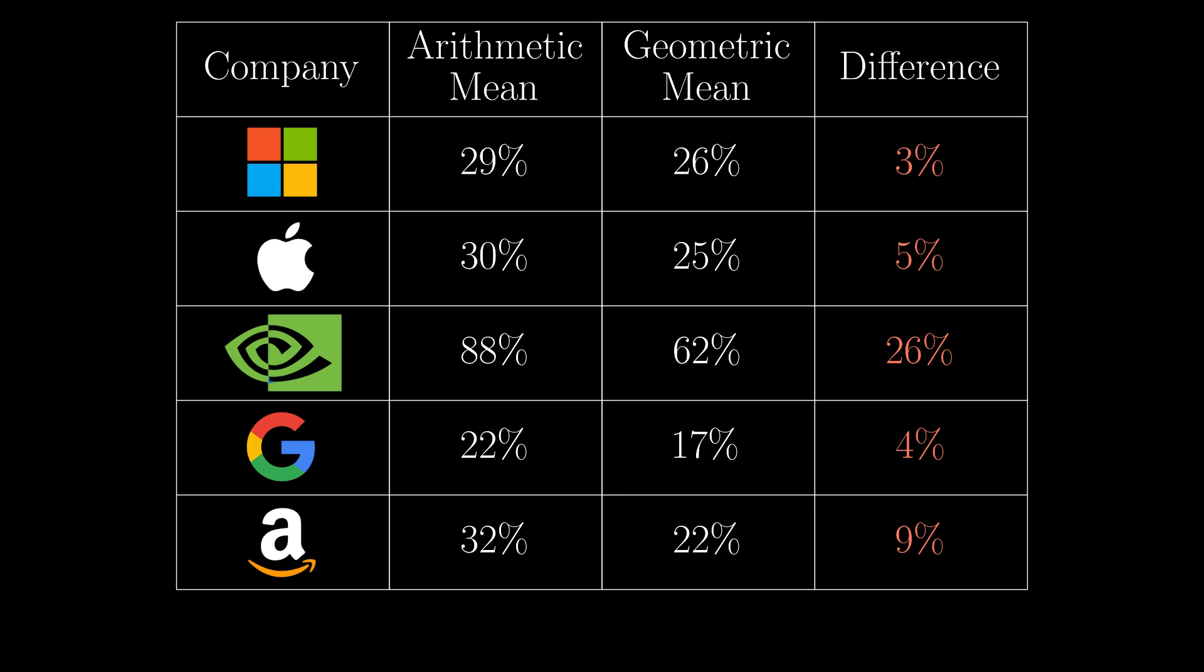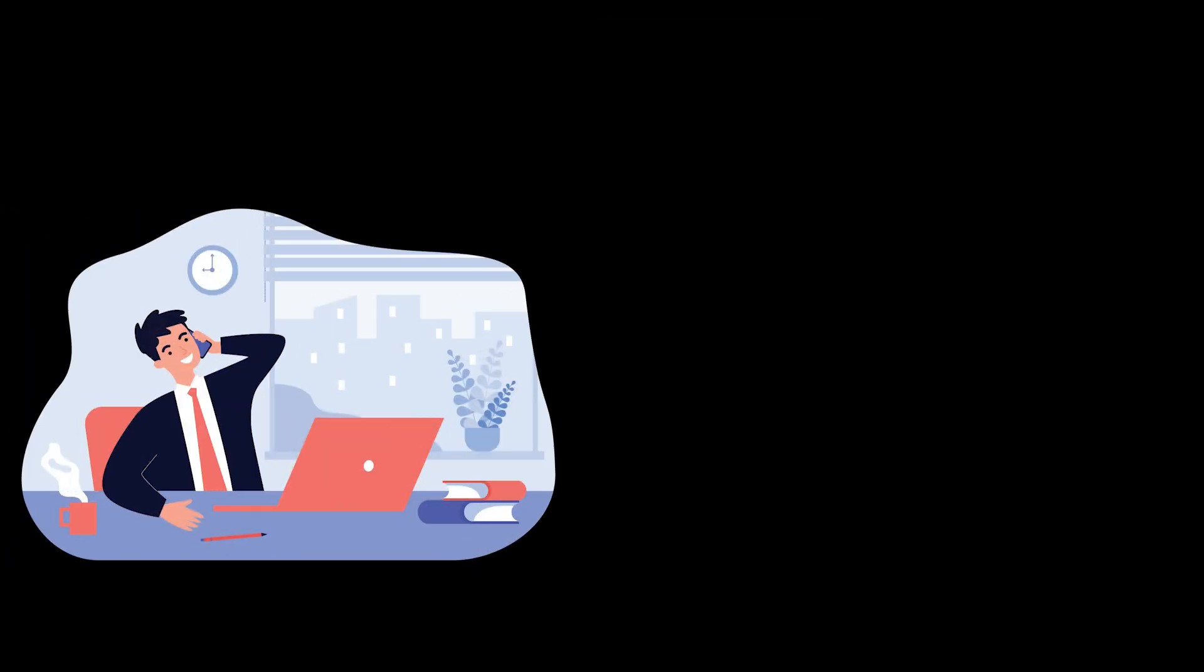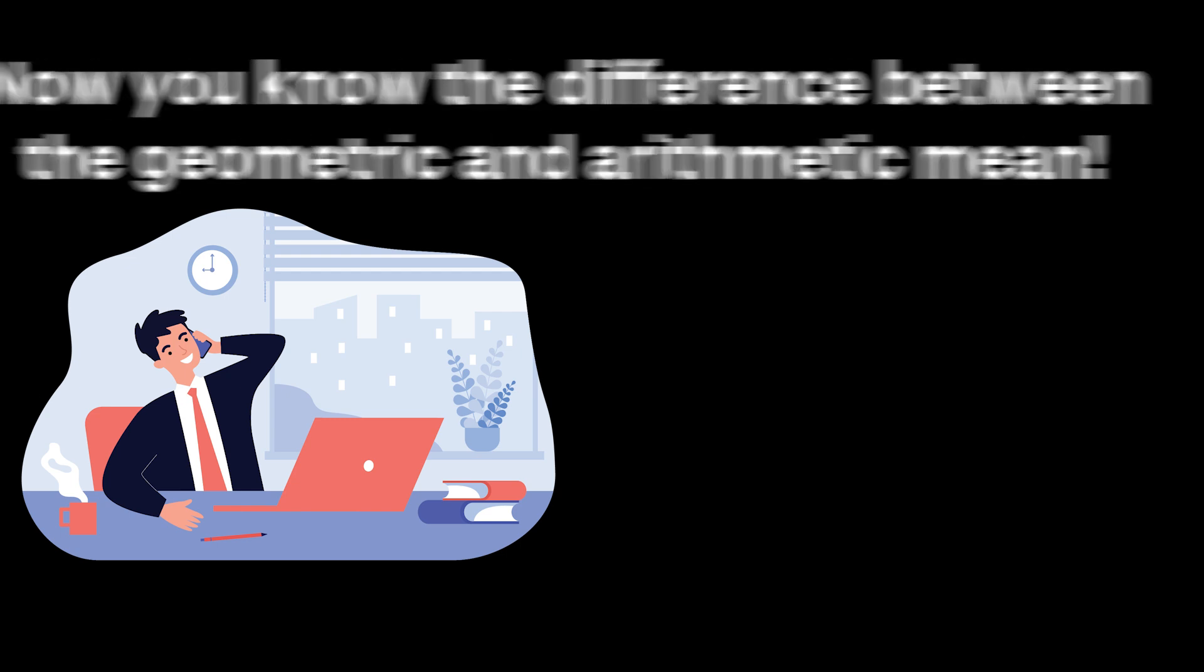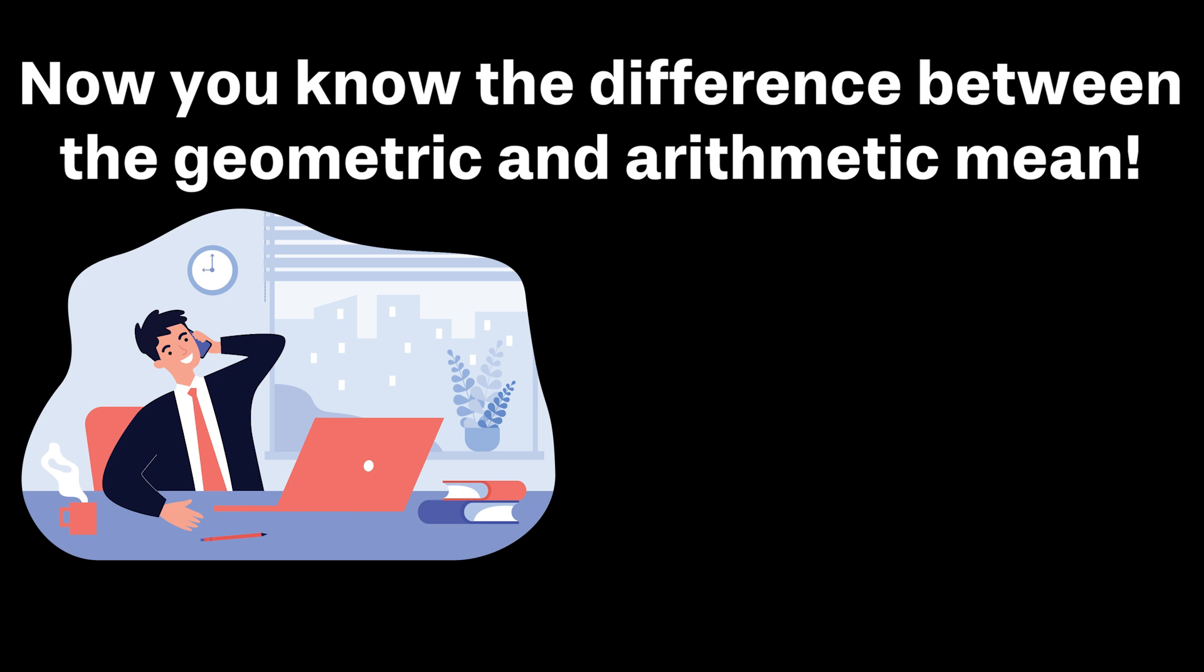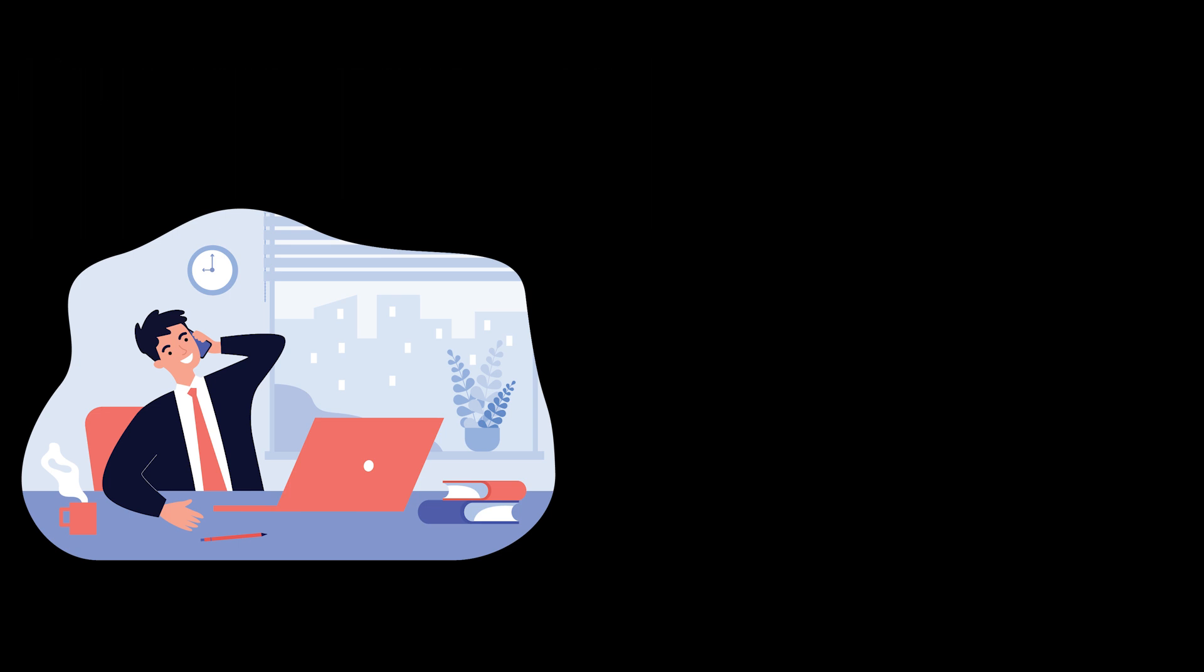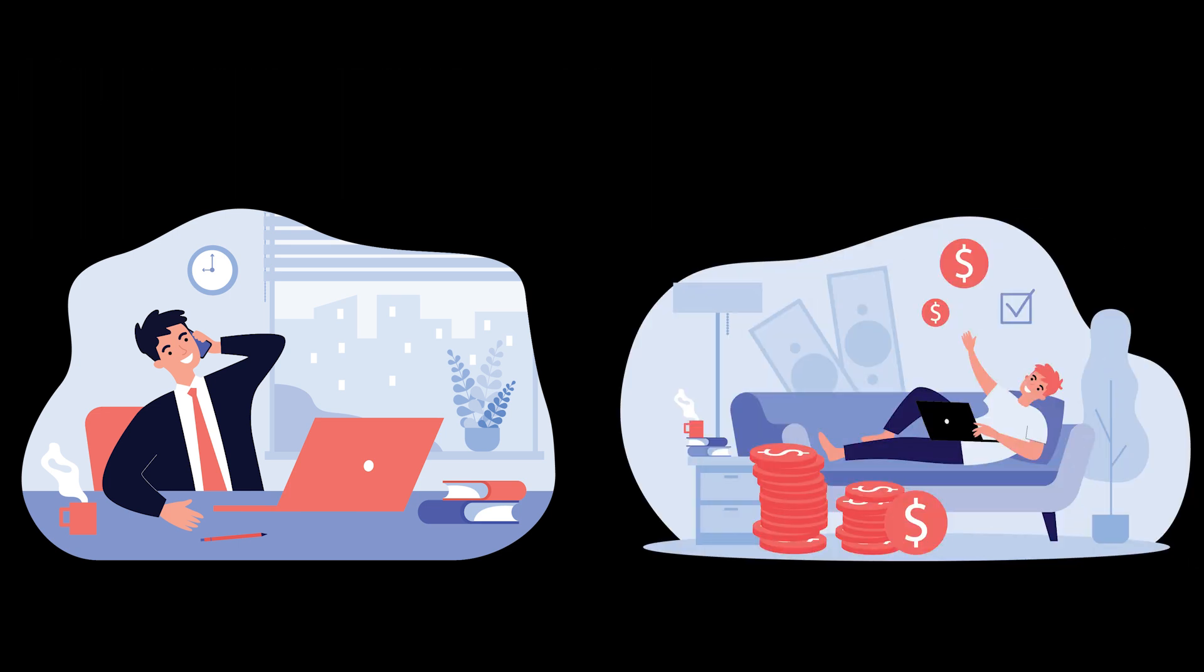So in summary, having watched this video, when you discuss investment returns with Frank or any other financial guru in the future, and they tell you that their average return is some obscenely high value, make sure that they disclose that that value is the geometric mean. And if they don't know the difference between the arithmetic and geometric means, perhaps you should oversee your fortune yourself. See you next time, and thanks again for your support.